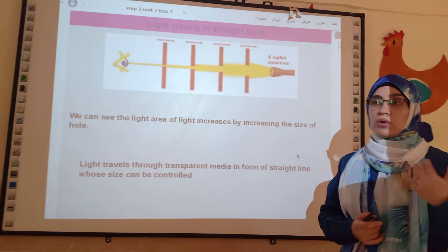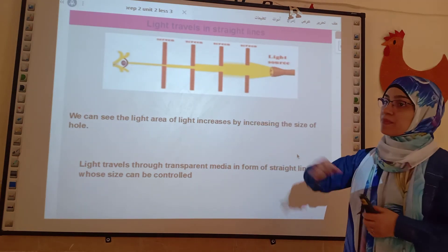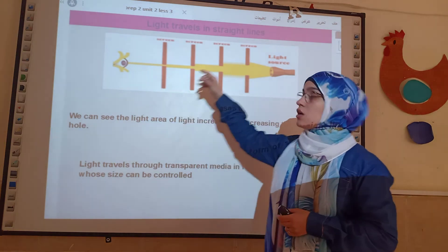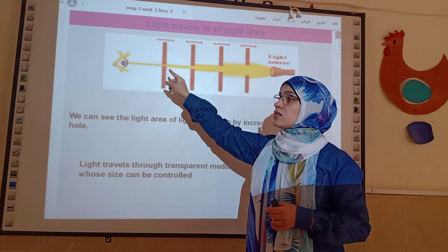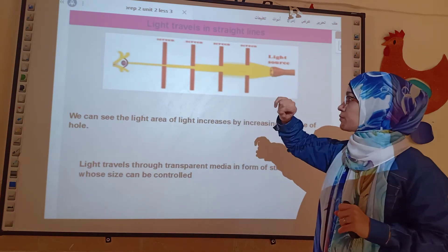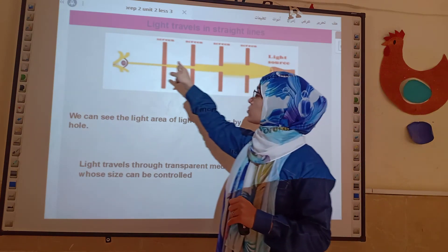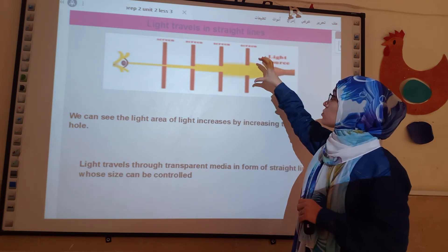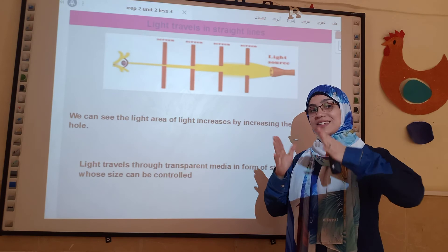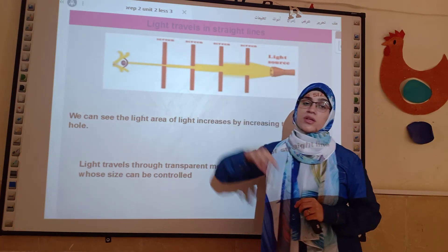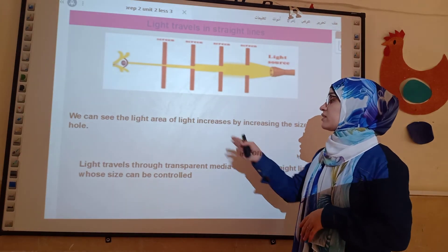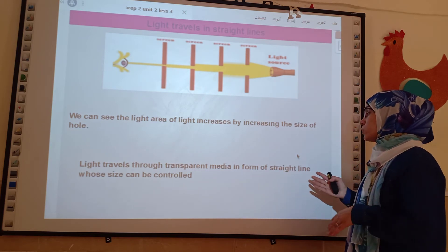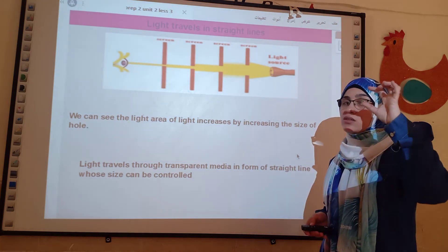As we said before in grade five, light travels in a straight line. If we take a light source and several different sheets which have holes of different sizes in them, we will notice that we can see the light through these sheets because light travels in a straight line. We can also control the thickness of the light beam by controlling the size of the holes in these sheets.